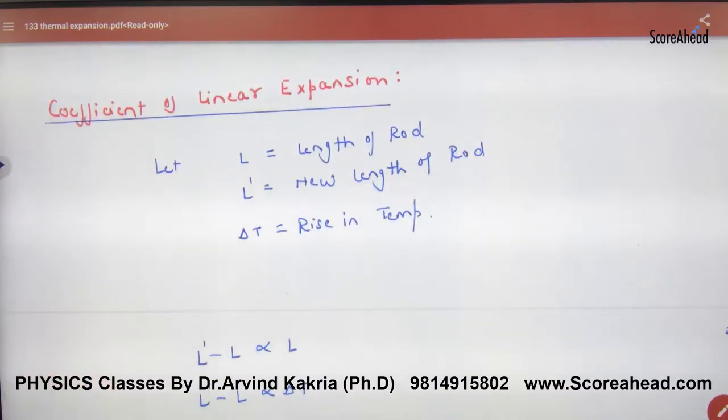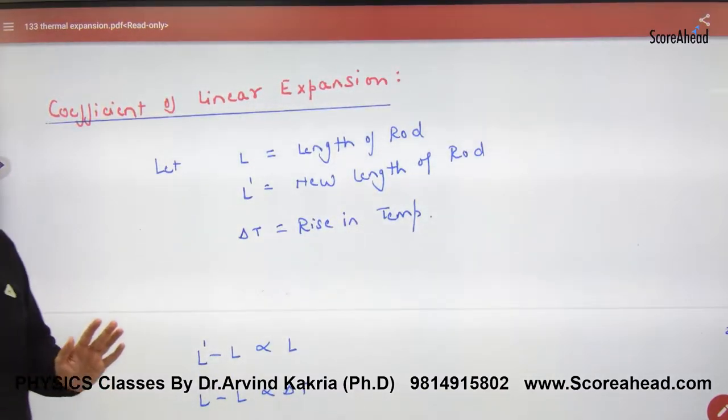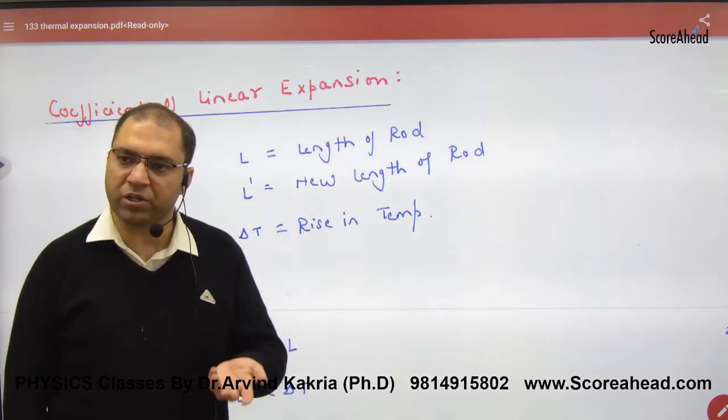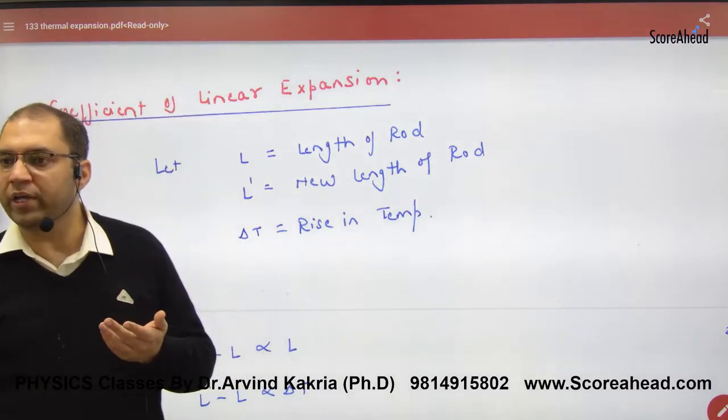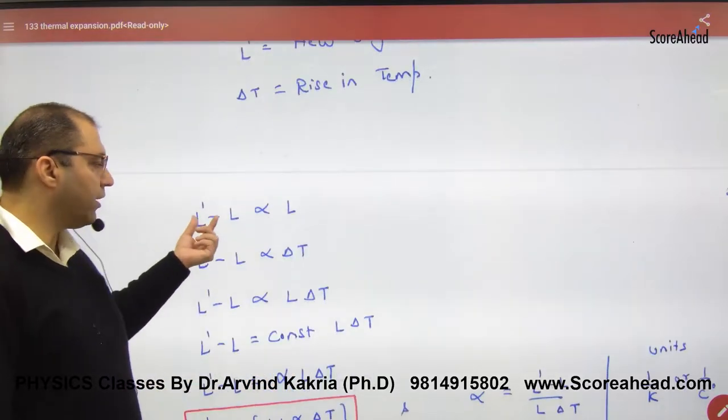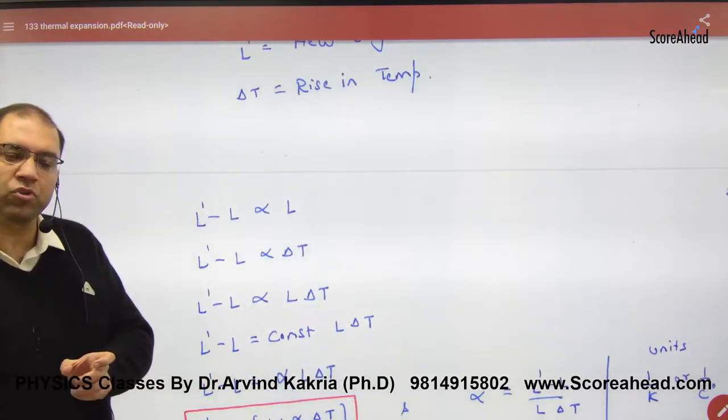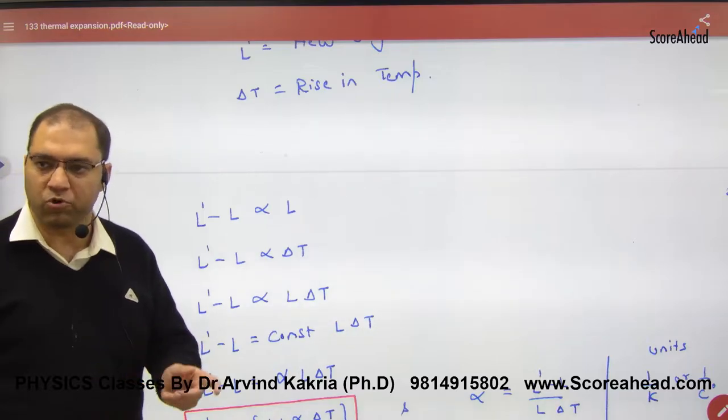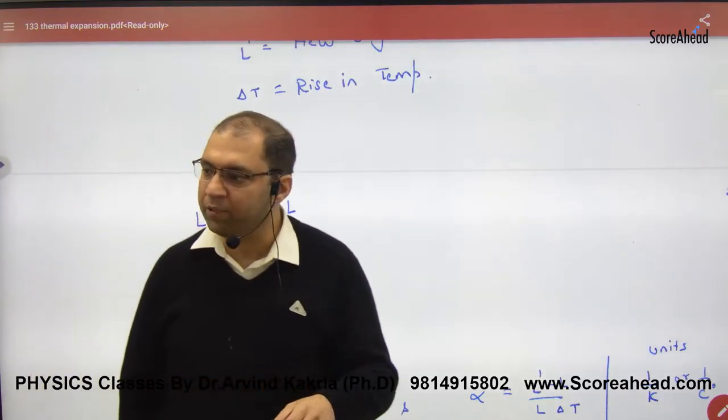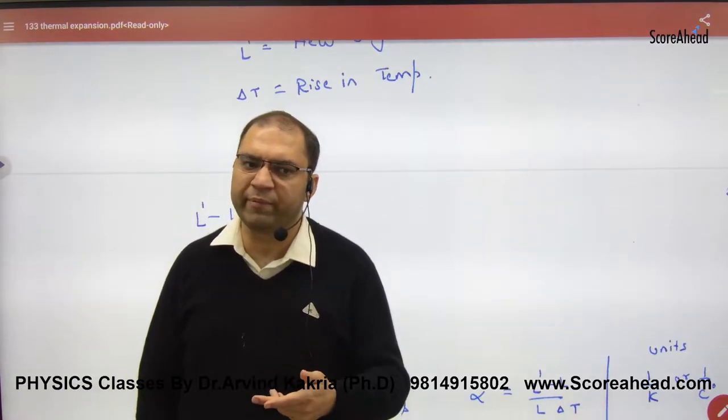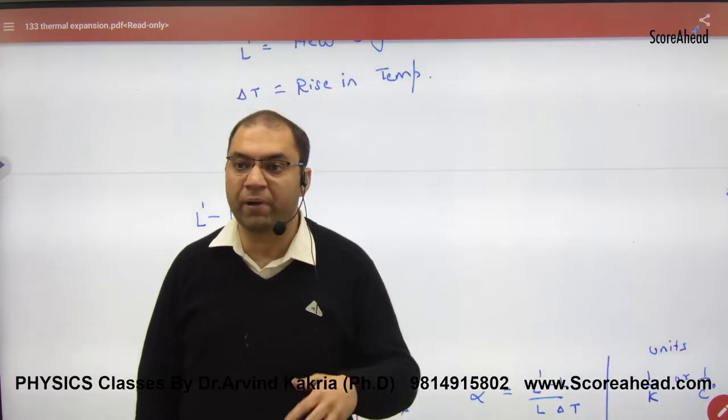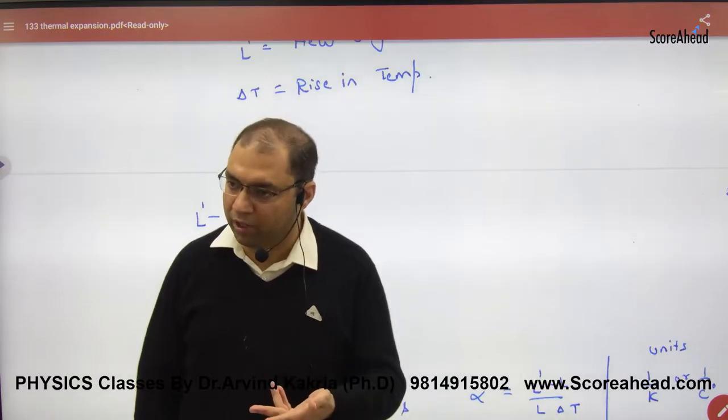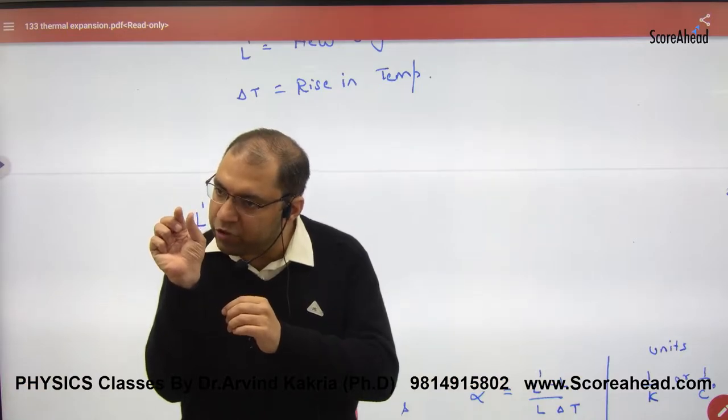Let's start with coefficient of linear expansion. If the original length of a rod is L and you increase the temperature by ΔT, then the new length is L'. The increase in length is proportional to the original length. If the original length is 10 meters and you increase temperature, the increase might be 0.1 or 0.2 meters. But if the original length is 5 kilometers, when you increase temperature, it will increase 2-4 meters. So if the original length is large, the change will also be large.